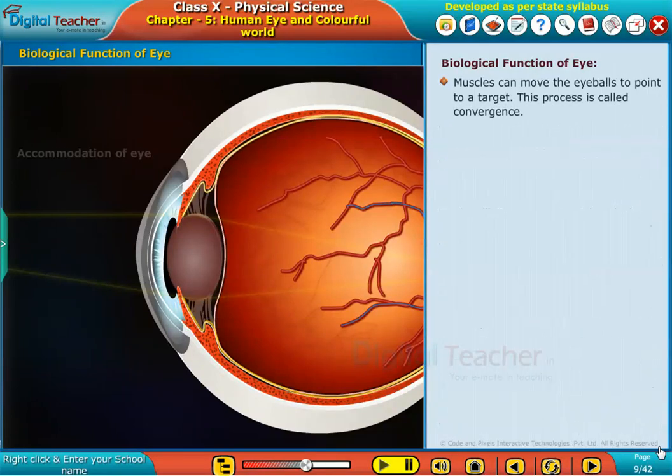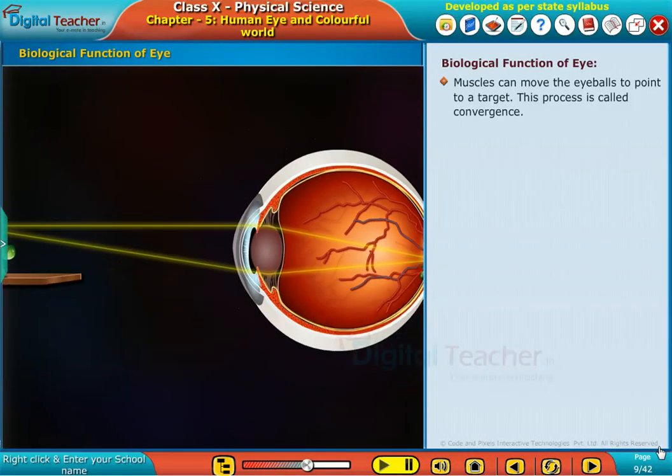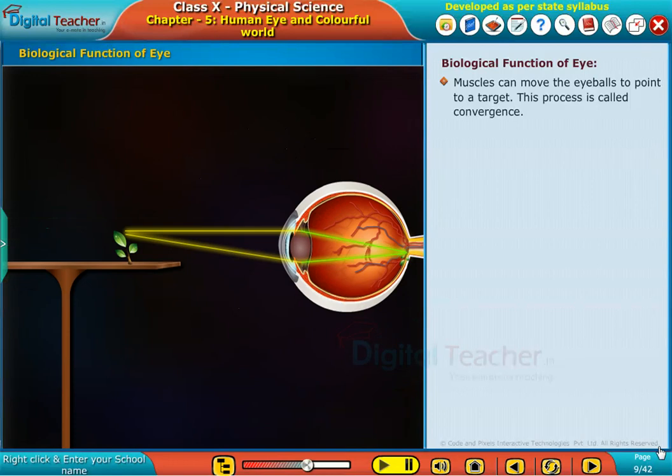Muscles can move the eyeballs to point to a target. This process is called convergence.